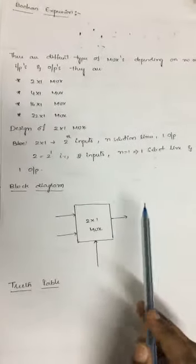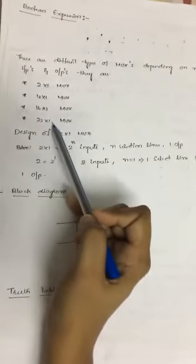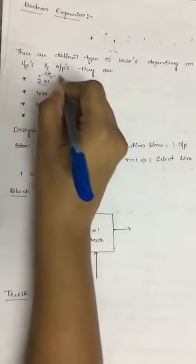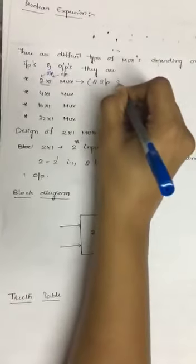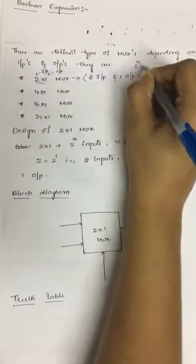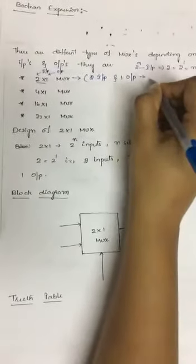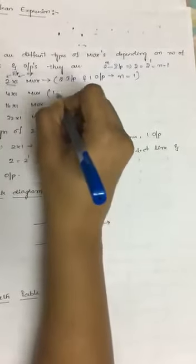There are different types of multiplexers depending on the number of inputs: 2×1 MUX, 4×1 MUX, 16×1 MUX, and 32×1 MUX. In a 2×1 MUX, 2 represents the input and 1 represents the output, so you have 2 inputs and 1 output. The number of selection lines equals n, where 2^n equals the number of inputs — for 2 inputs, n equals 1, giving 1 selection line.